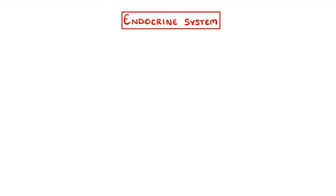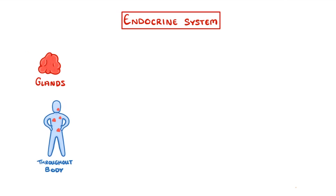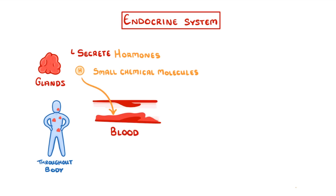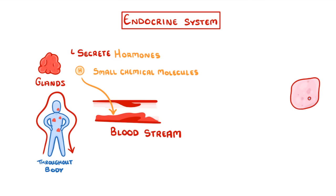The endocrine system consists of a series of glands that are found throughout the body. What they have in common is that they create hormones, which are small chemical molecules that are passed into the blood and then spread throughout the body in the bloodstream. This allows the hormones to come into contact with a wide range of tissues.